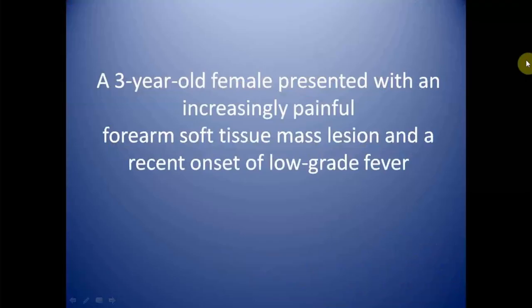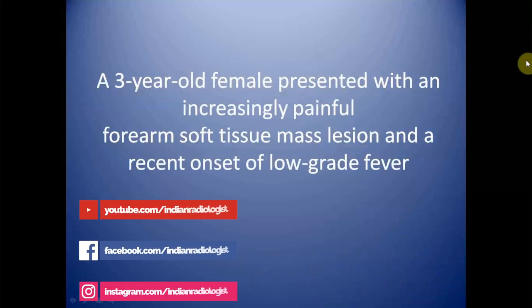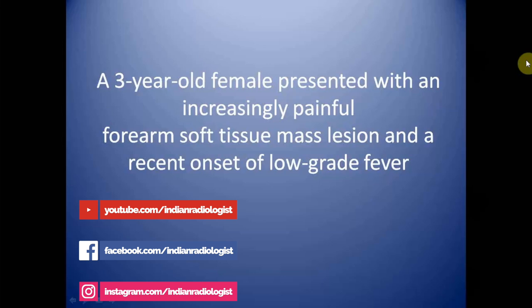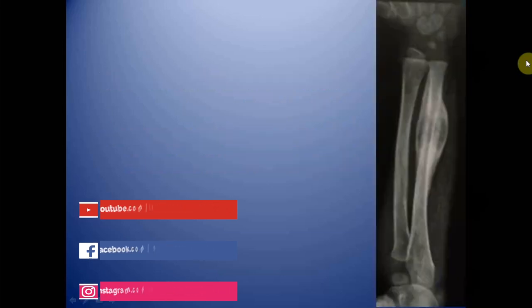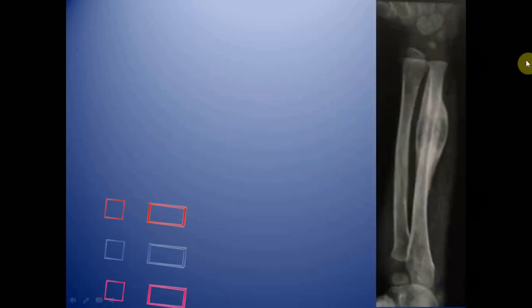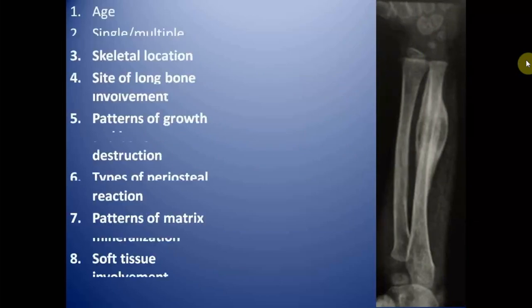This is the case of a 3-year-old female who presented with an increasingly painful forearm soft tissue mass lesion and recent onset of low-grade fever. This is the frontal radiograph of the forearm of the patient and we will review this lesion on the basis of the following criteria.